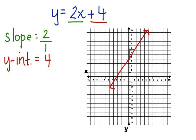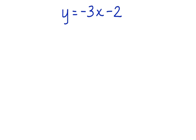Let's take a look at another one. Here we have the equation y equals negative 3x take away 2. Our slope is negative 3 and our y-intercept is negative 2.